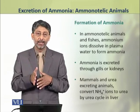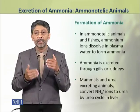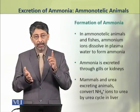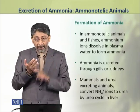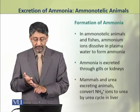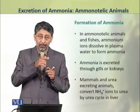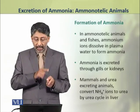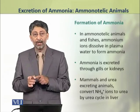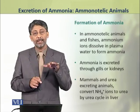Ammonia is excreted through gills or kidneys. In mammals and urea-excreting animals, ammonium ions are converted into urea by the urea cycle in the liver.